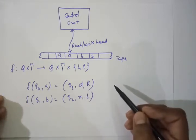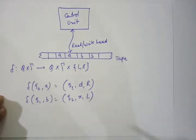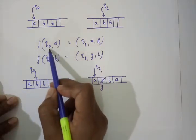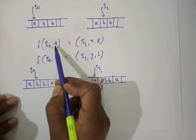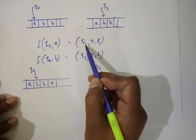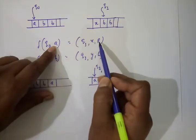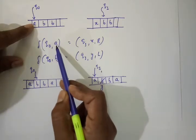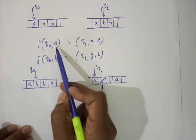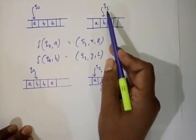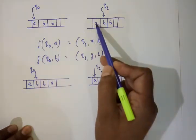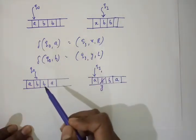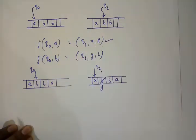We take a diagrammatic representation of this delta function. This transition rule says: we are in state Q0 and reading A from the tape. Then our new state will be Q1, this A is replaced by X, and we move one cell right. So from state Q0 reading A, we move to state Q1, replace A with X, and move one symbol to the right.